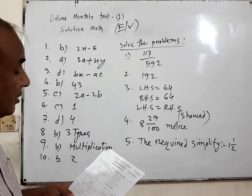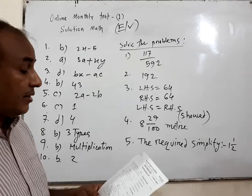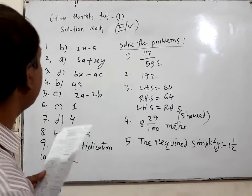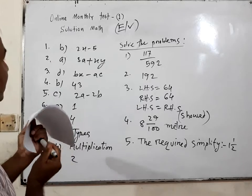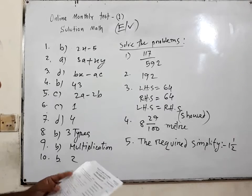Number 1. Which one will be the result if 5 is subtracted from 2 times of x? So 2 times of x means 2x minus 5. Result is B.